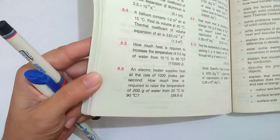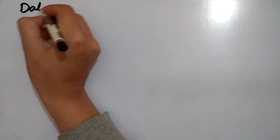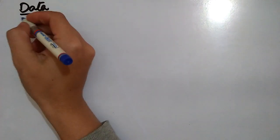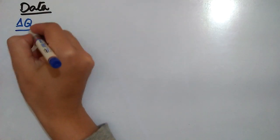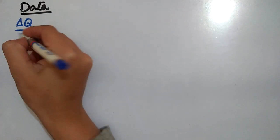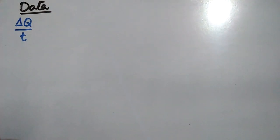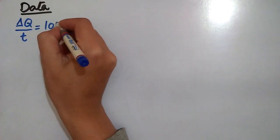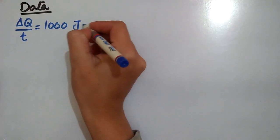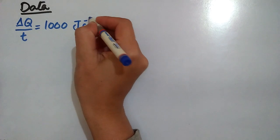Let's take the data. Rate of flow of heat — you can say power — and rate of flow of heat, that is delta Q over t, is equal to 1000 joules per second.